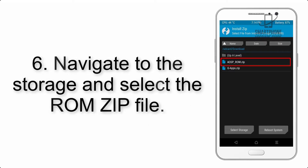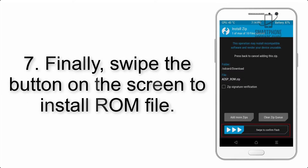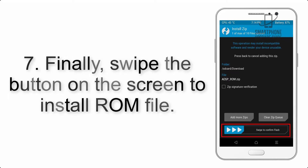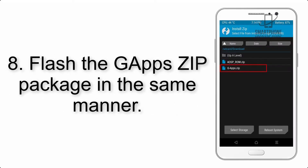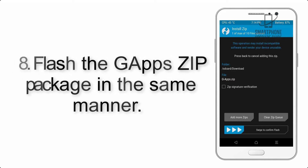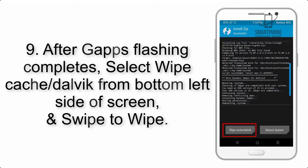Step 5: Go back to the recovery main screen and tap on the Install button. Step 6: Navigate to the storage and select the ROM zip file. Step 7: Finally, swipe the button on the screen to install the ROM file.